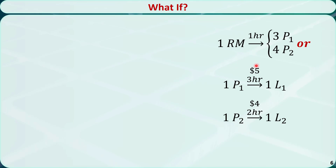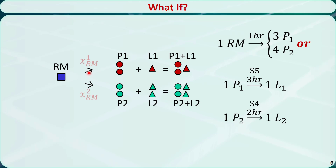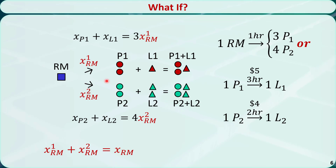What if we change the problem a little bit? Each unit of raw material yields 3 units of product 1 or 4 units of product 2. In this case, we define x_RM1 as the amount of raw material used to make product 1, and x_RM2 as the amount of raw material used to make product 2. The constraints are updated accordingly. We have an additional relation: the portion of raw material used to make product 1 plus the portion used to make product 2 equals the total amount of raw material.